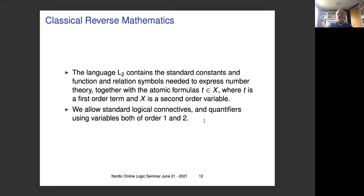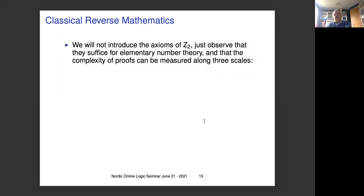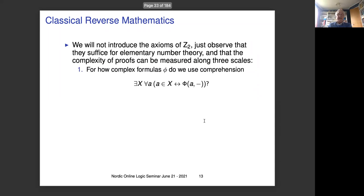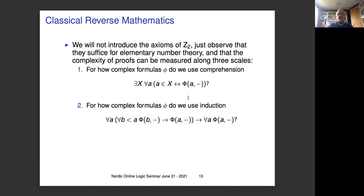We allow standard logic connectives and quantifiers using variables of both order one and two. The complexity of proofs can be measured along three scales: first, for how complex formulas do we use comprehension — the set existence axioms asserting there exists an X consisting of numbers satisfying a formula φ; second, for how complex formulas do we use induction; and third, for how complex formulas do we need to use the axiom of choice.